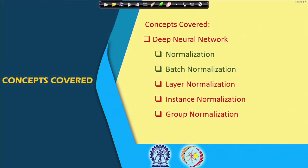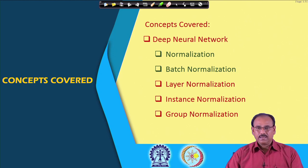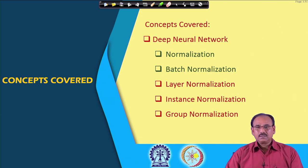In today's lecture we will talk about other normalization techniques: layer normalization, instance normalization, and group normalization. One problem with batch normalization is that performance highly depends on batch size — if you reduce the batch size, performance degrades, whereas with a larger batch size, performance is quite acceptable.